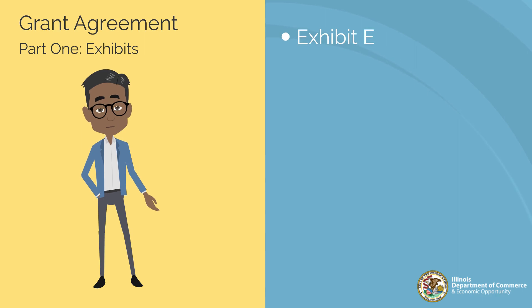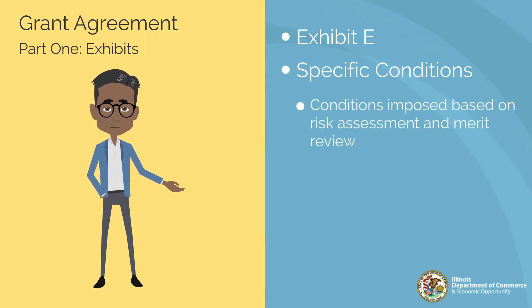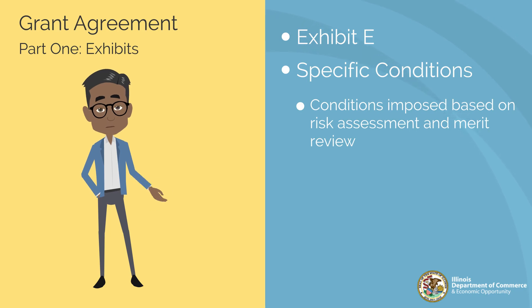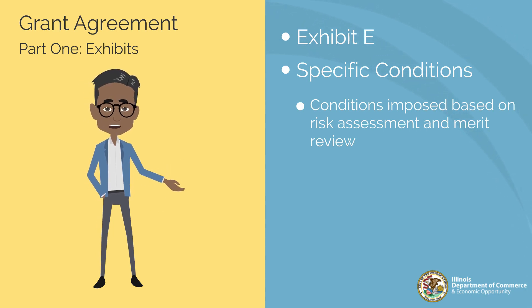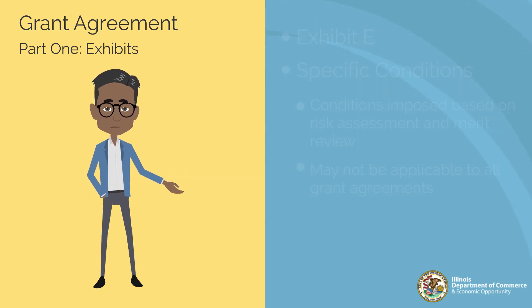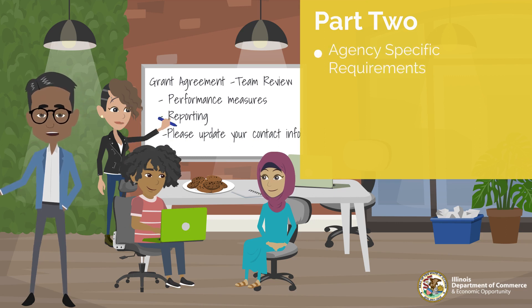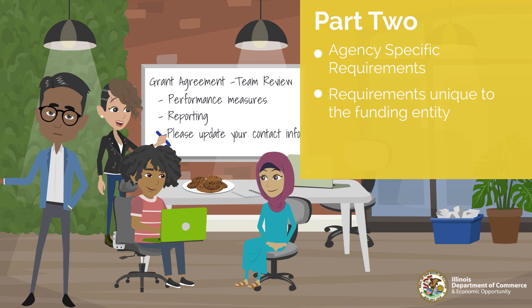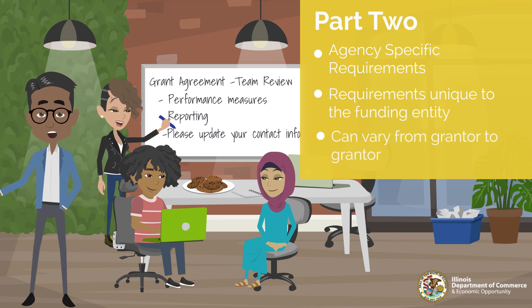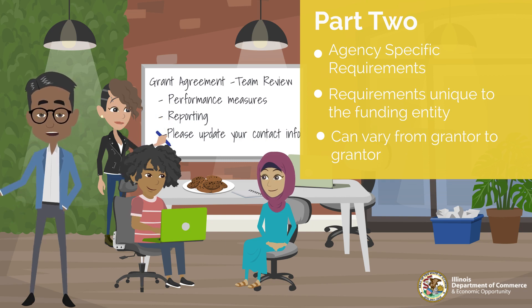Exhibit E, Specific Conditions, lists specific conditions imposed based on the risk assessment and merit review of the application. If applicable, it also includes methods to remove the specific conditions. This section may not be applicable to all grant agreements. Part 2 outlines agency-specific requirements. These are explicit requirements outlined by the funding entity or grantor. Requirements can vary from agency to agency, so understanding this section of the grant agreement can better acquaint you with the standards of the funding entity.